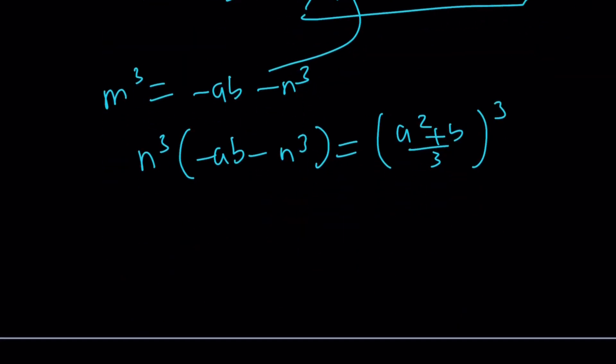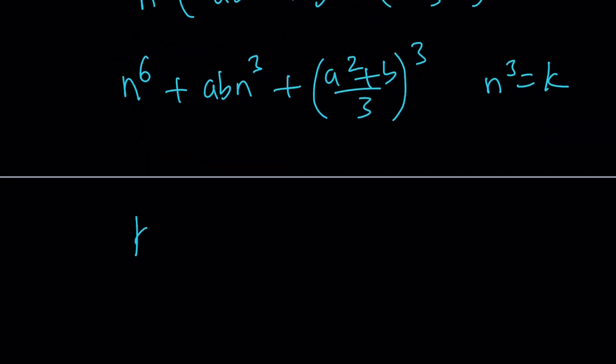And then you're going to go ahead and distribute. That's going to give you -N⁶. Let's put everything on the right-hand side so things become positive. And this is what we get at the end. And then I want to set N³ to K so that I can get a quadratic. K²+abK+(a²+b)³/27=0.